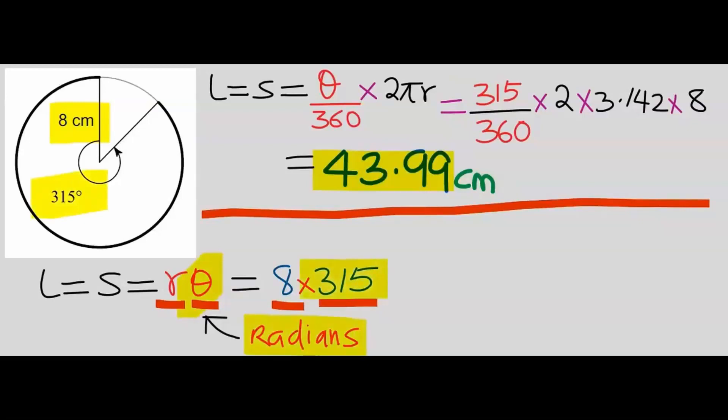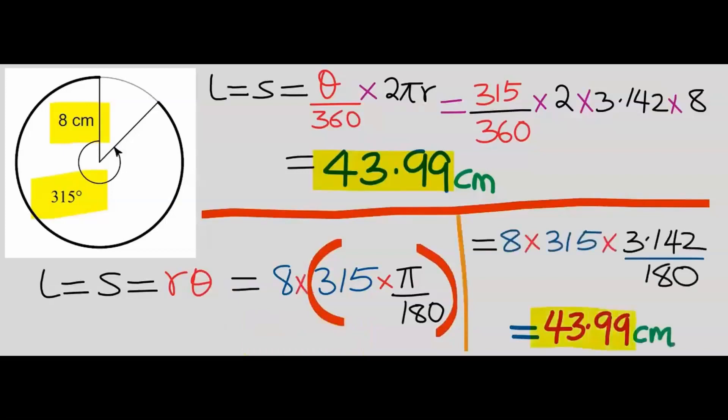However, the question is in degrees. To fix this problem, we're going to multiply the angle by pi divided by 180. If you solve carefully, you're going to obtain the same answer. If you must use the radians formula for a given degree, then you must learn how to convert.